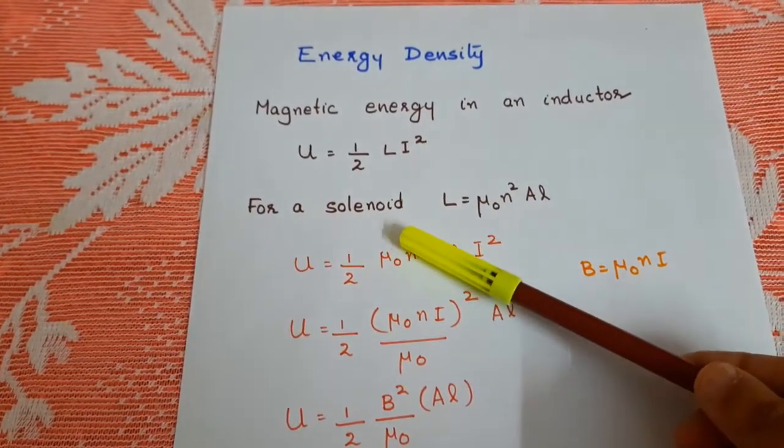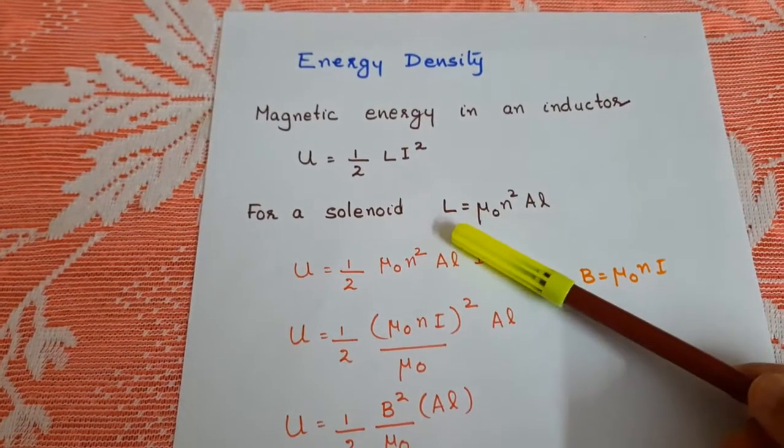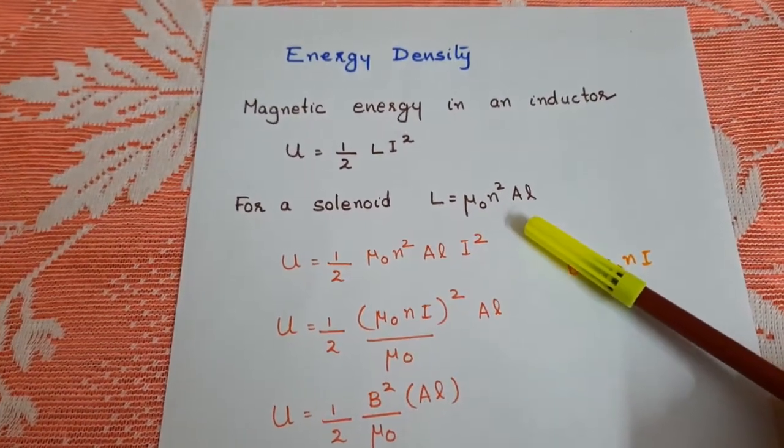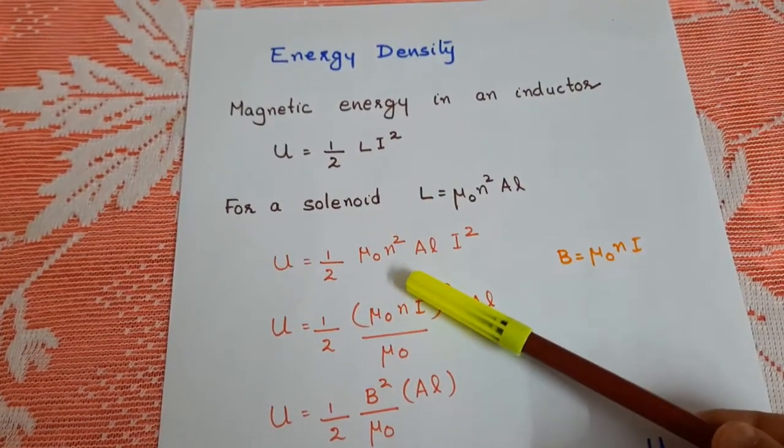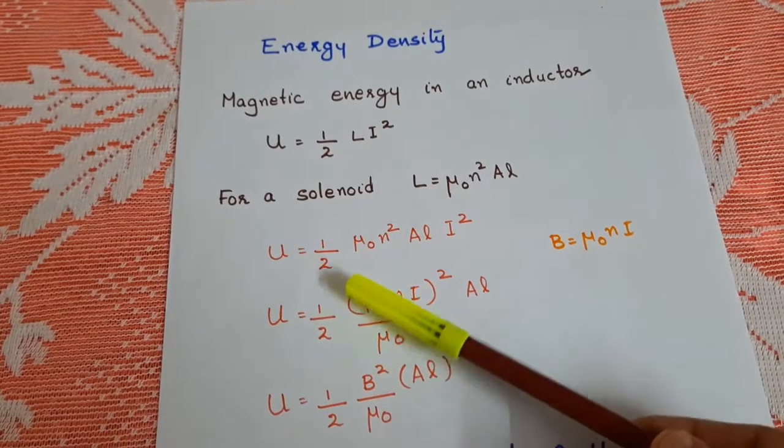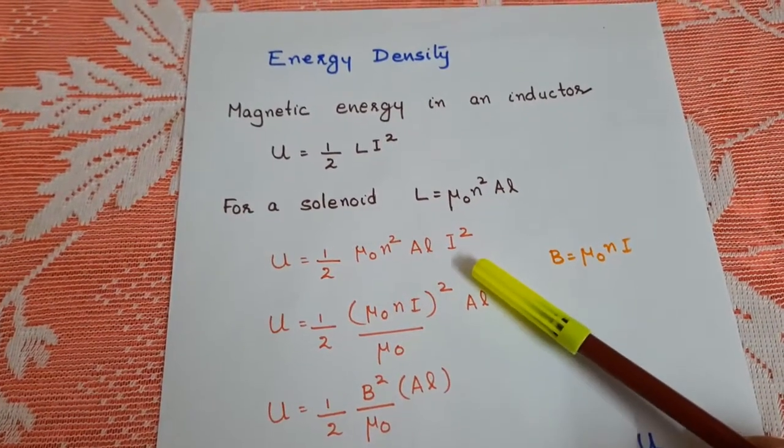For a solenoid, self-inductance L is mu0 N square A L. So let us substitute for L. The potential energy is half mu0 N square L I square.